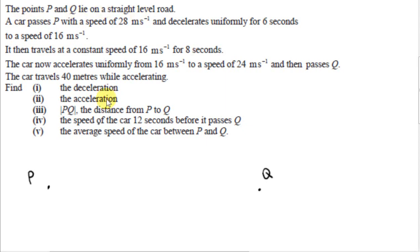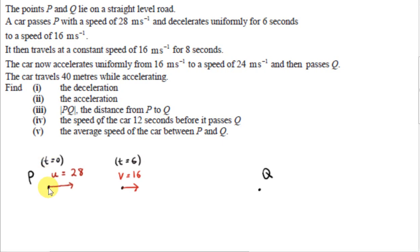Points P and Q lie on a straight level road. A car passes point P with a speed of 28 meters per second and decelerates uniformly for 6 seconds to a speed of 16 meters per second. At T equals 0, the car is at P. Its speed is 28, so the magnitude of the velocity vector is 28. The car's velocity is pointing towards Q. After 6 seconds, the speed of the car is 16, so the magnitude of the velocity vector is 16.